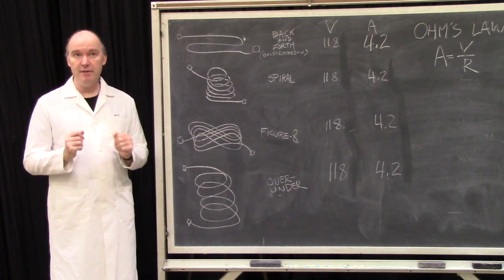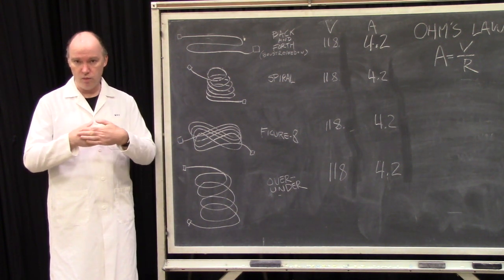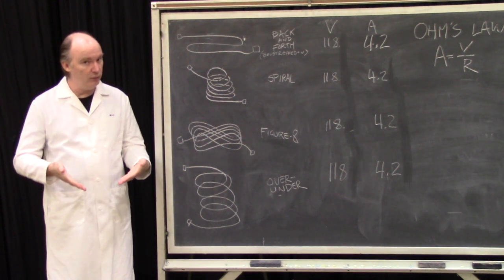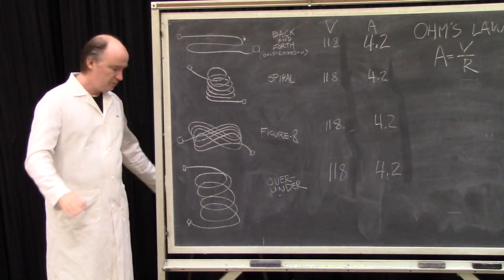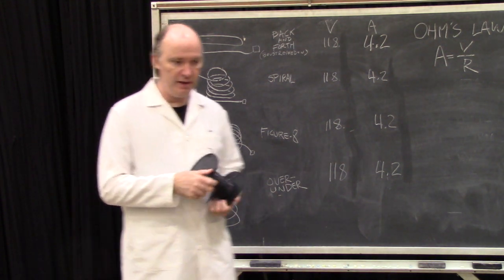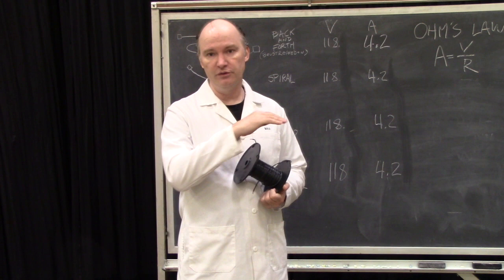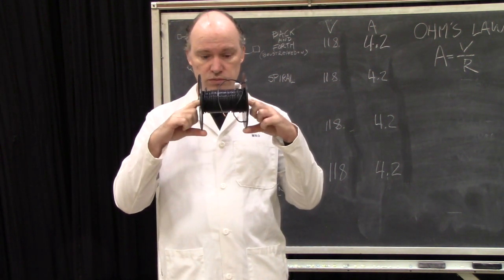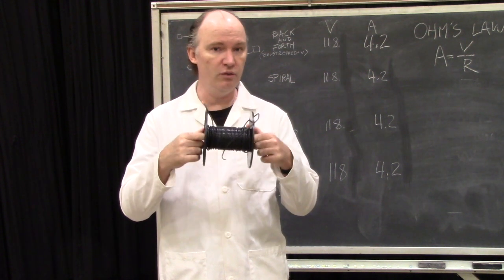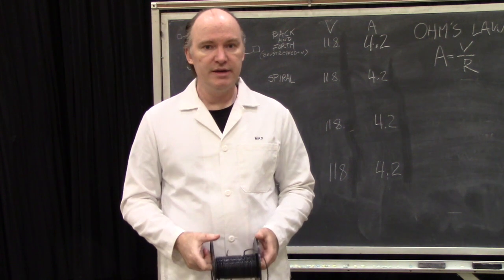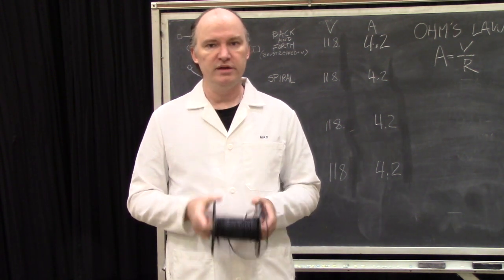So then I thought to myself maybe it's because the hot and the neutral are running right alongside each other in the same jacket, maybe stuff's canceling out. So I grabbed just separate lengths of wire and ran the neutral straight from the outlet to the lamp and then ran the hot through this 60 foot spool of 12 gauge wire. Took my measurements, got 118 volts, drawing 4.2 amps.